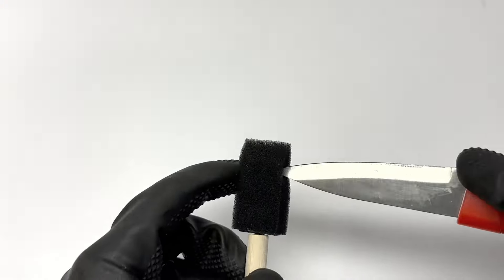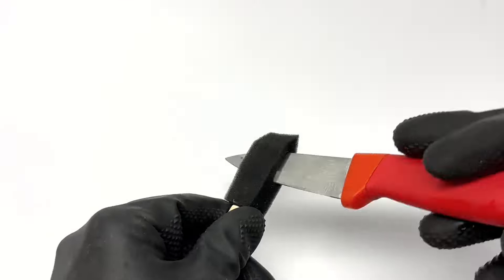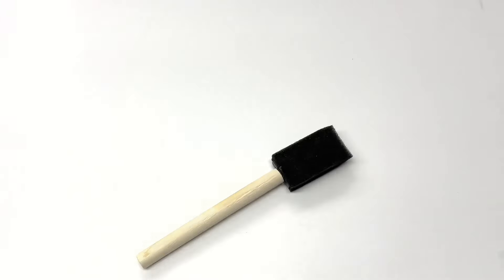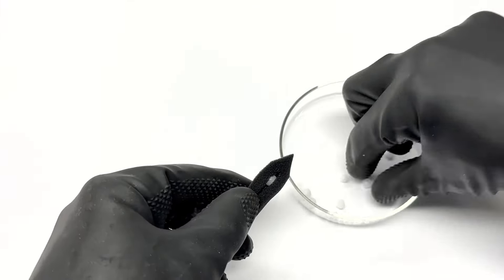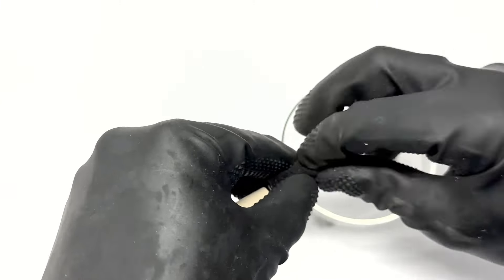To pull this off, first get a foam paintbrush and then cut a slit all the way through the foam. Next, take a bunch of solid pellets of sodium hydroxide and pack them into the slit made in the foam brush.